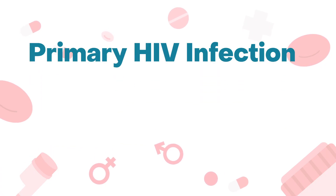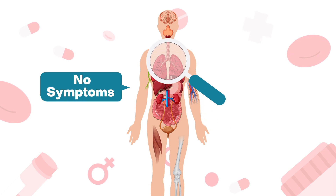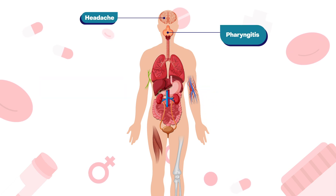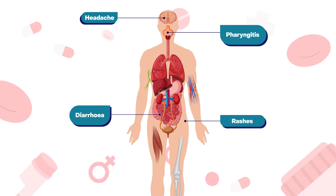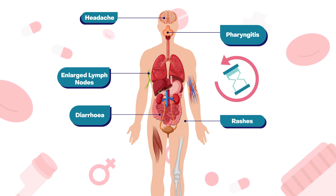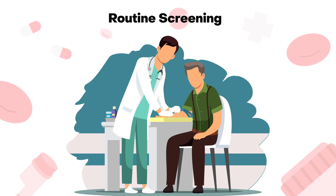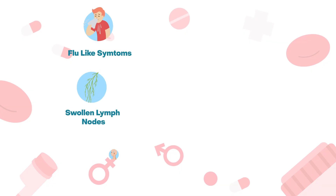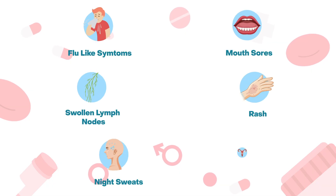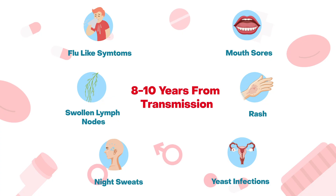Primary HIV infection can present without symptoms, or as a febrile illness with headache, pharyngitis, diarrhoea, rash, and enlarged lymph nodes. Diagnosis is often delayed, however, and patients are later identified in the chronic asymptomatic phase of infection via routine screening. Later still, some are diagnosed only when opportunistic infections settle in, which might be another 8 to 10 years from transmission.